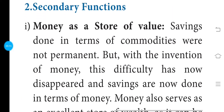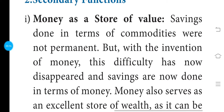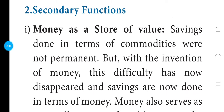Let's look at secondary function. Money has a store of value, while primary functions include medium of exchange and measure of value. In secondary function, there is a store of value. Savings done in terms of commodities were not permanent.